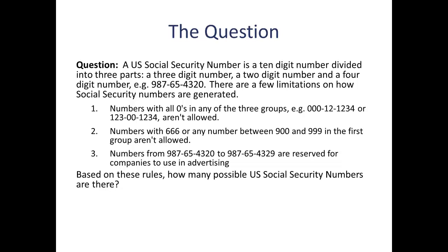There are some limitations on how those numbers are generated. Numbers with all zeros in any of the three groups — like 000-12-1234 — aren't allowed. Numbers with 666 or any number between 900 and 999 in the first group aren't allowed. And numbers from 987-65-4320 to 987-65-4329 are invalid, as they're reserved for companies to use in advertising.